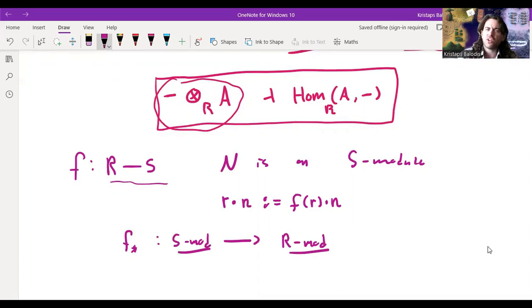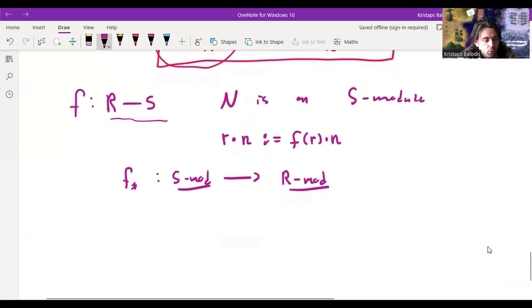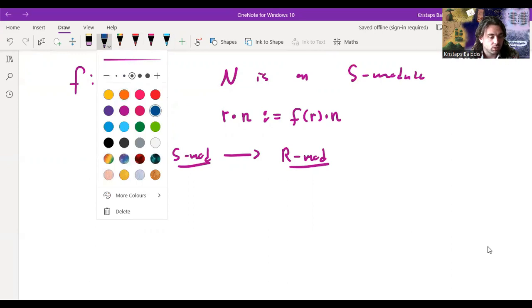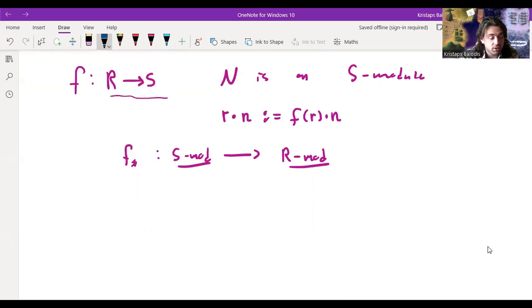And the way that I do that is I'm going to define an element of the ring R to act on some N in the S module N by, well, all that N knows is how to be acted on by elements of S, but I can simply apply my ring homomorphism F to R. And now I already have, because N is an S module, I already have a way to act on that as an actual module action. So it shouldn't be too hard to convince yourself that this does in fact turn N into an R module. And in fact, this process is functorial. So this defines a functor.